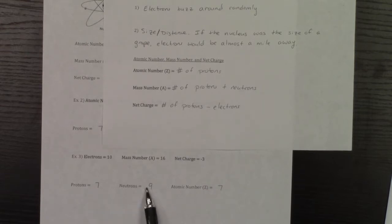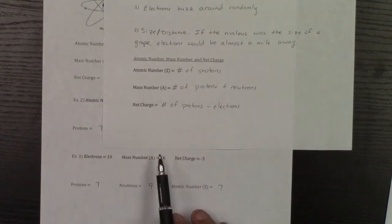If I want to find neutrons, I know that the sum of the protons plus neutrons has to equal 16. So that's why since seven plus nine is 16, that's why I have nine neutrons.